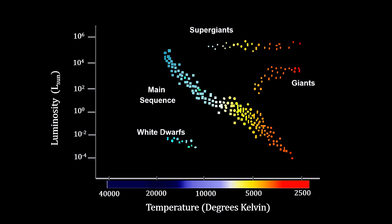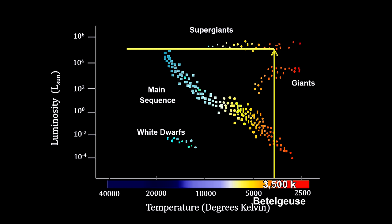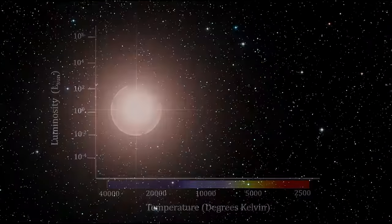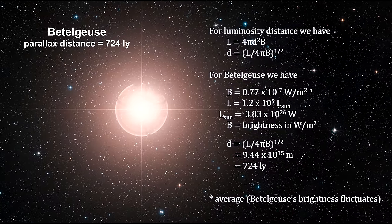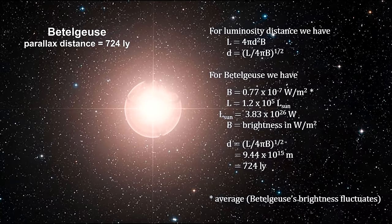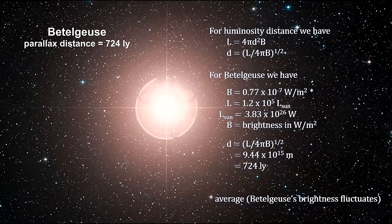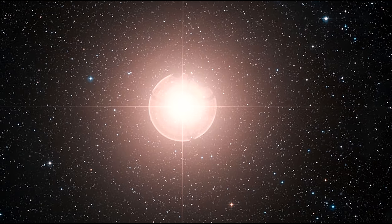We'll use Betelgeuse to illustrate how star spectra works with the HR Diagram to determine a star's distance. First, we use the star's color, temperature, and spectra to find its point on the horizontal axis. Looking up the vertical luminosity axis, we see Betelgeuse could either be a main sequence star or a giant. Examining the luminosity class, we see that it is very sharp, implying that Betelgeuse is a supergiant. Drawing the line to the vertical axis, we see that the star's intrinsic luminosity is 120,000 times greater than our Sun's luminosity. Measuring the apparent luminosity and using the inverse square law, we get the distance. Astronomers call this technique spectroscopic parallax.